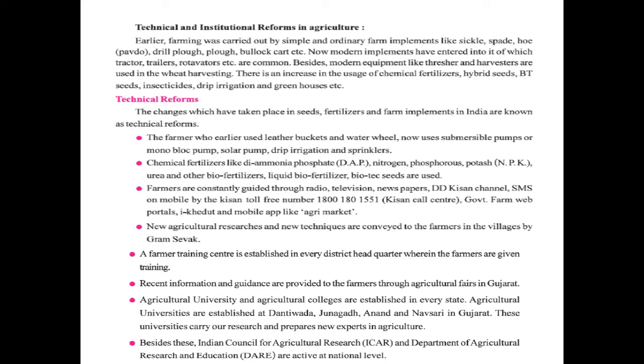Farmers who earlier used leather buckets and water bills now use submersible pumps or monoblock pumps, solar pumps, drip irrigation, and sprinklers. Chemical fertilizers like ammonium phosphate, nitrogen, phosphorus, potash, urea, and other bio fertilizers, liquid bio fertilizers, and biotech seeds are used.